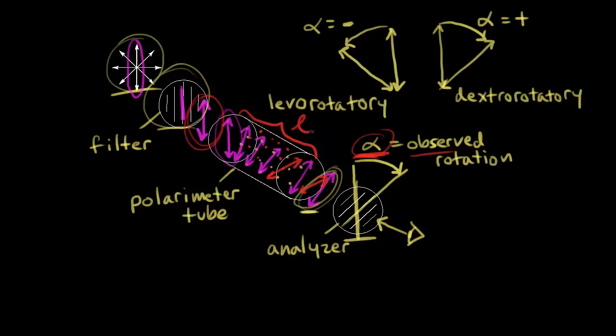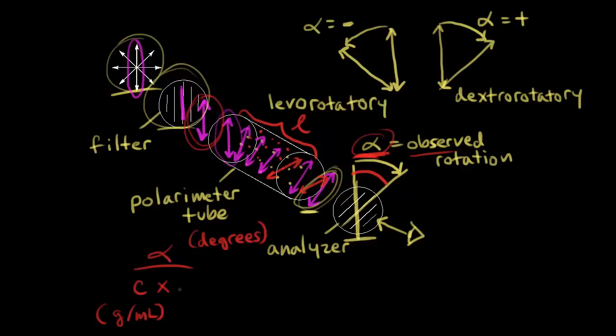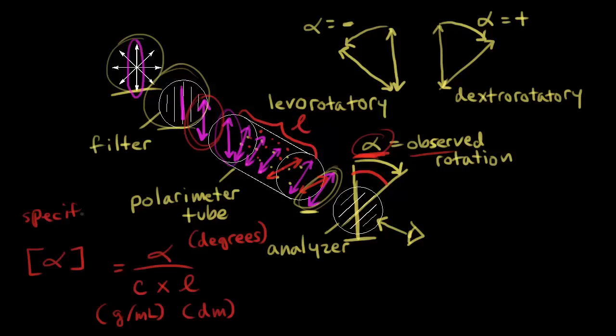Let's take these ideas of observed rotation, concentration, and path length and turn them into an equation. If you take the observed rotation alpha, which is measured in degrees, and divide it by the concentration — in grams per mL — multiplied by the path length L in decimeters, you get something called the specific rotation, written as alpha in brackets. The specific rotation is a constant; your observed rotation might change depending on concentration or path length, but dividing alpha by concentration times path length always gives you the specific rotation.